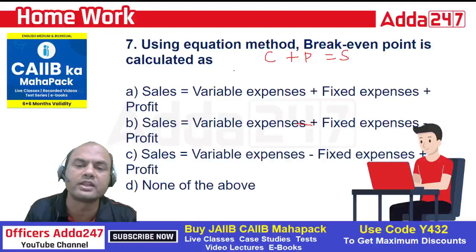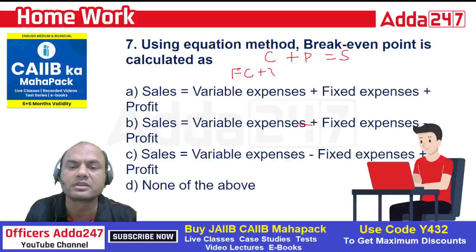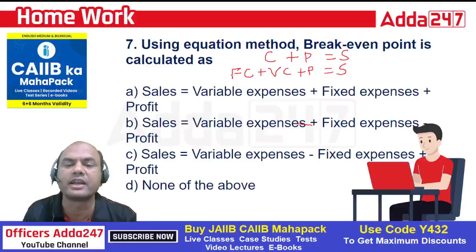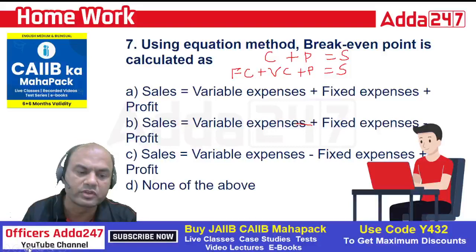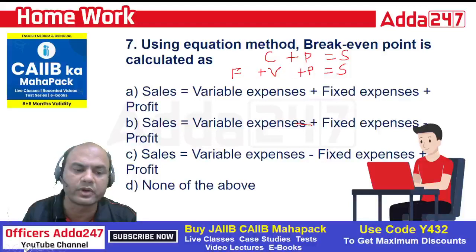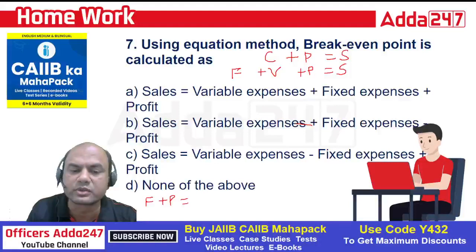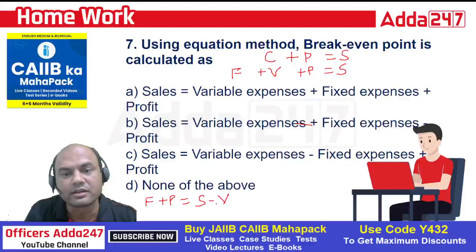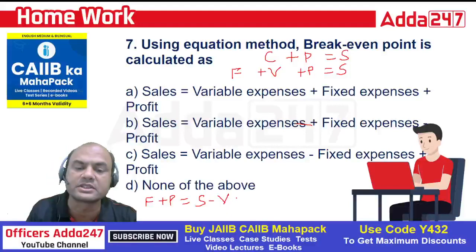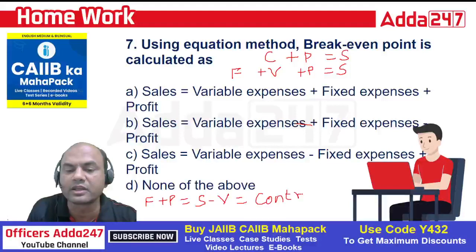In cost, we have two types: one is fixed cost and second is variable cost. So: fixed cost plus variable cost plus profit equals to sales. I will write it as F plus V plus P equals to S. Once you get this, just take V on the other side — it becomes F plus P equals to S minus V. That is the basic formula of any break-even or cost analysis, and that is called contribution. Always remember: F plus P equals to S minus V — this is known as contribution.